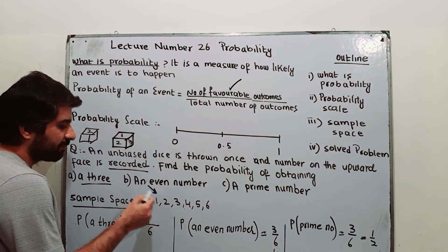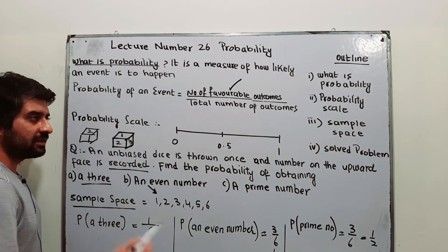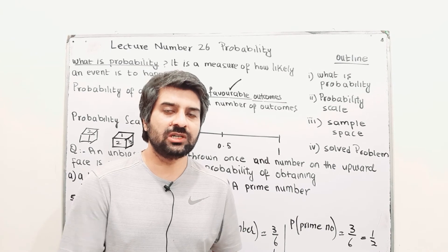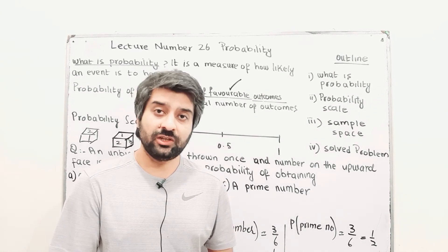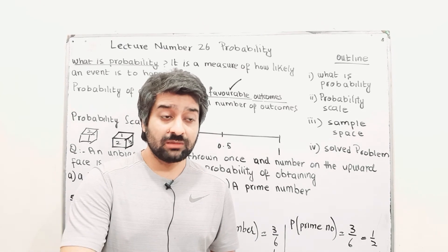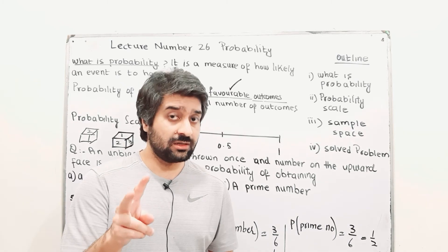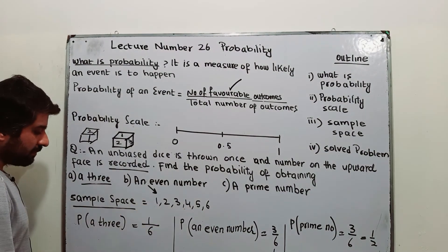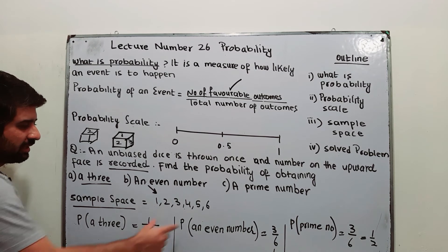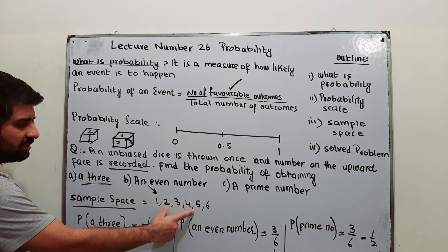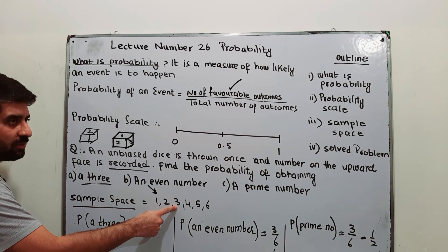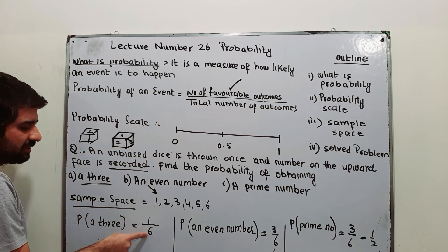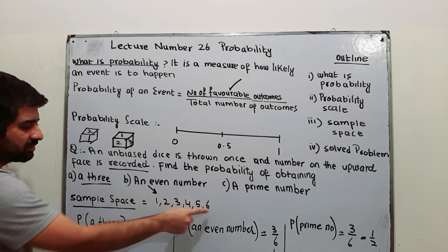All the possible results are written in the sample space. For example, appearing in an exam you write pass or fail; for rainfall it can be yes or no; for a coin toss you may get a head or a tail — those two outcomes form the sample space. Sample space is the total number of outcomes. To find the probability of getting a three: look at your sample space — three appears one time, so that is your favorable outcome. One divided by the total number of outcomes.